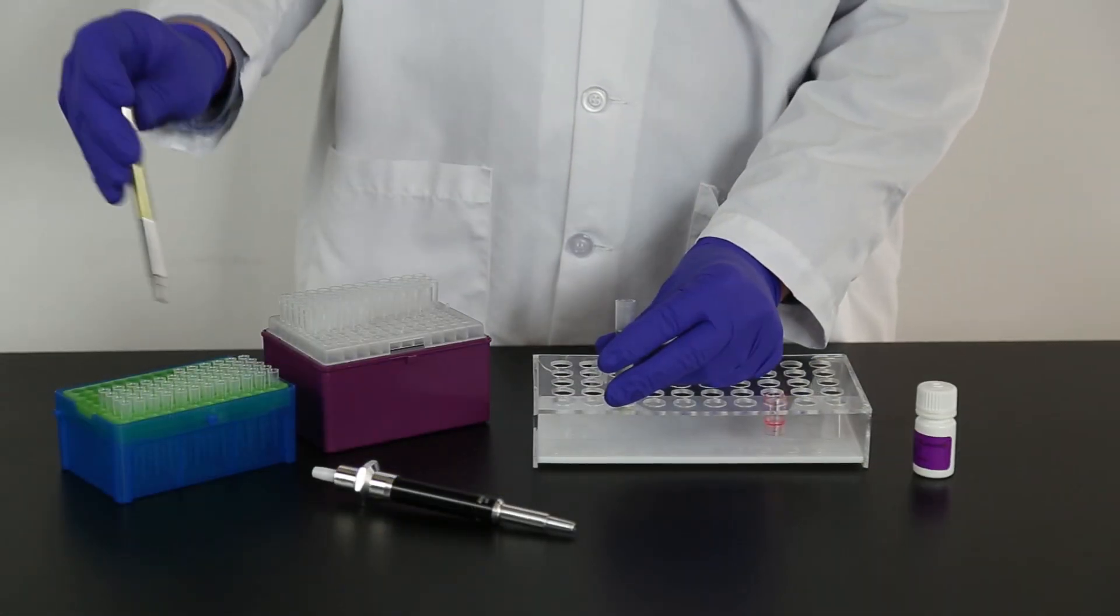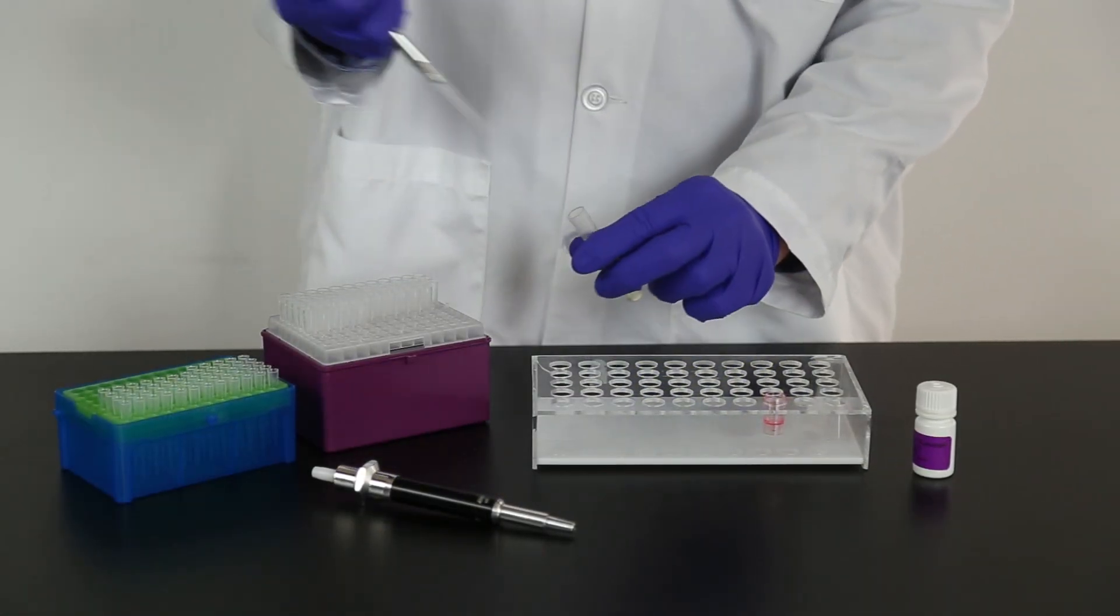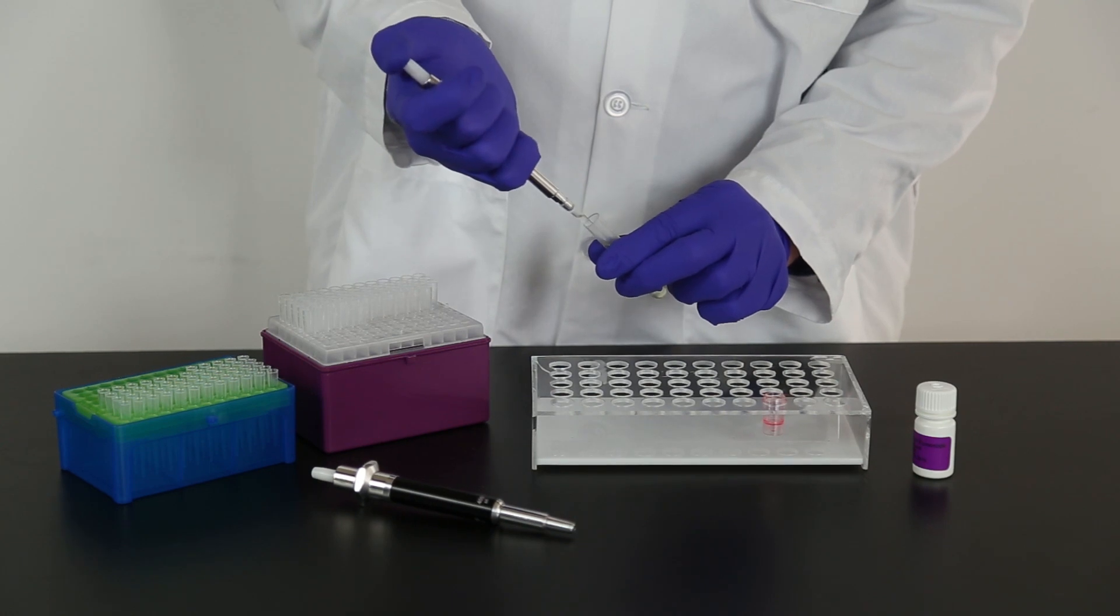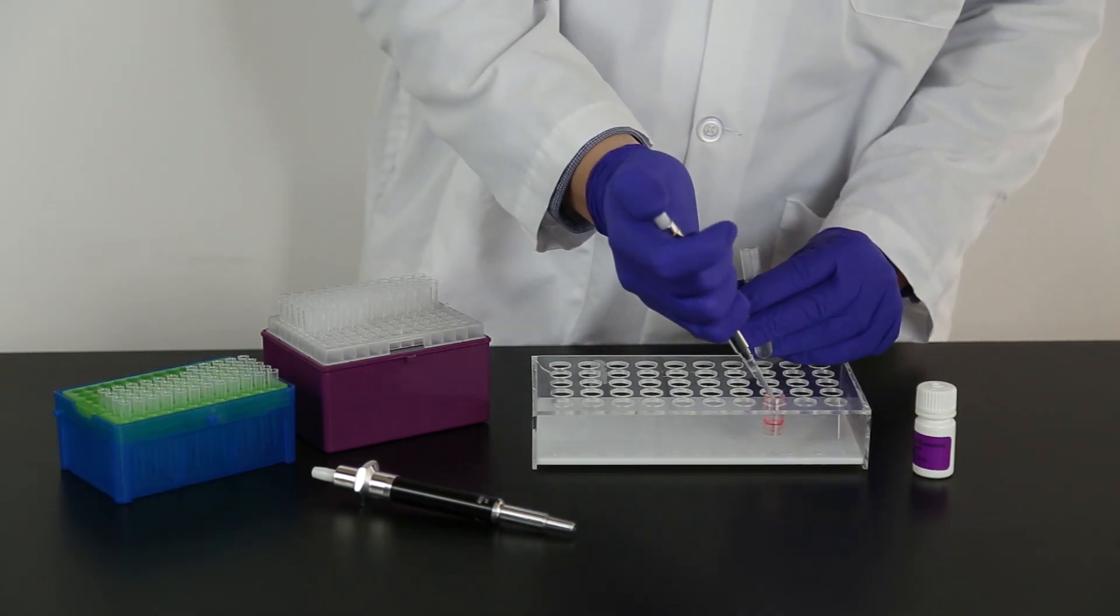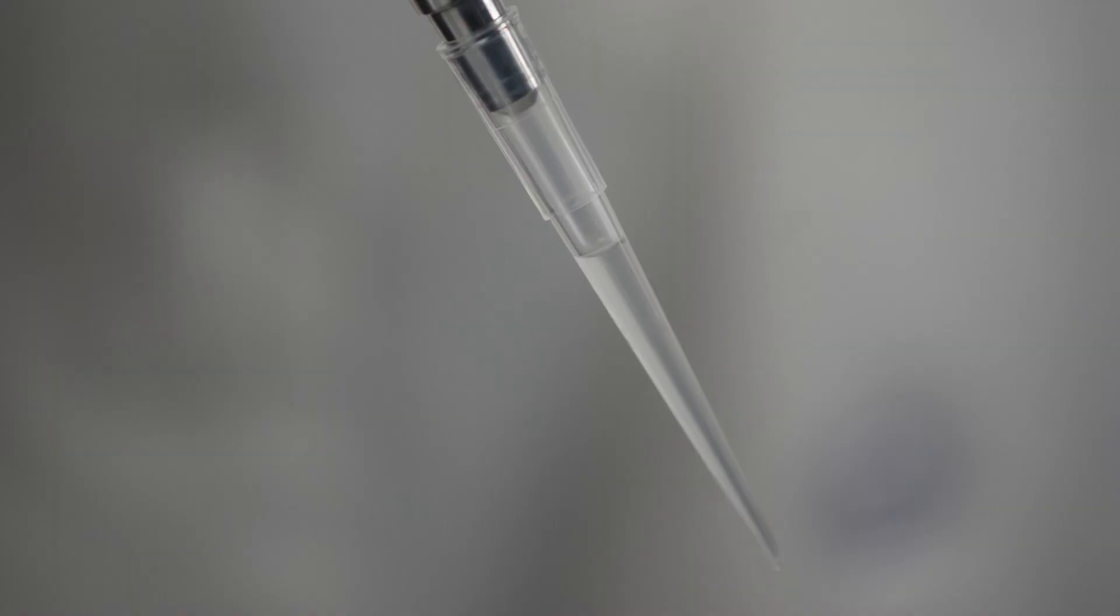For each sample you are testing, place a red dilution cup into the sample rack. Add 200 microliters sample to the red dilution cup. It is important to make sure the pipette tip is fully charged with liquid and doesn't have any air bubbles prior to dispensing the liquid into the cup.